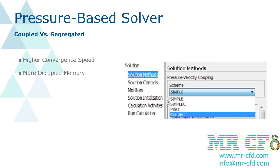Unlike the segregated method, the coupled solution method solves a set of momentum coupling equations and the pressure-based continuity equations simultaneously, so there is no need to solve the pressure-correction equation. After solving pressure and velocity as a coupled system, the remaining equations such as energy and turbulence are solved separately. Since pressure and velocity are solved simultaneously, convergence speed is higher, but the memory used is 1.3 times more than in the segregated method.